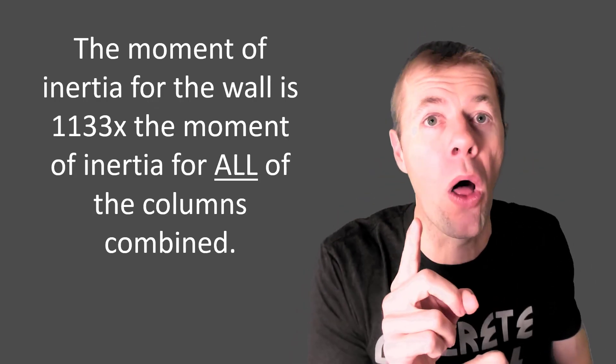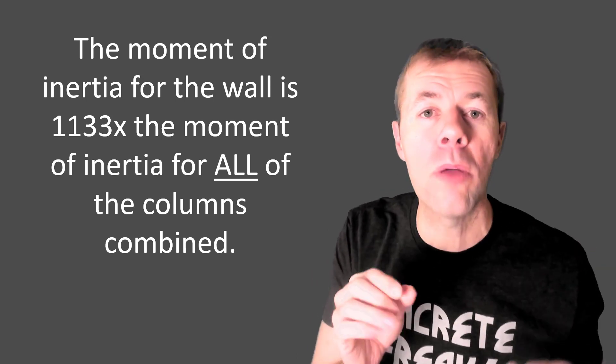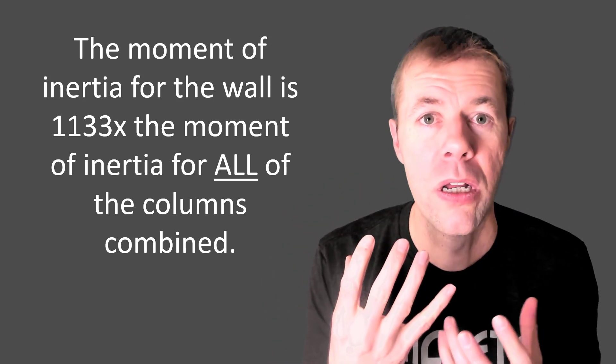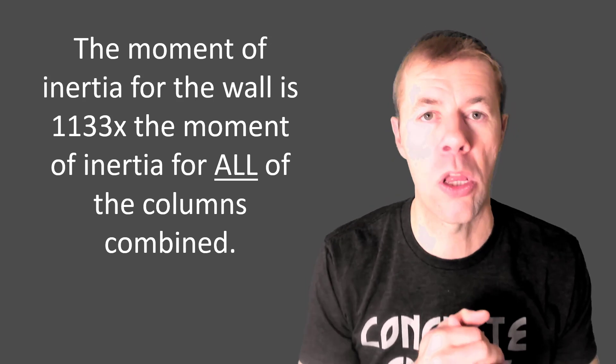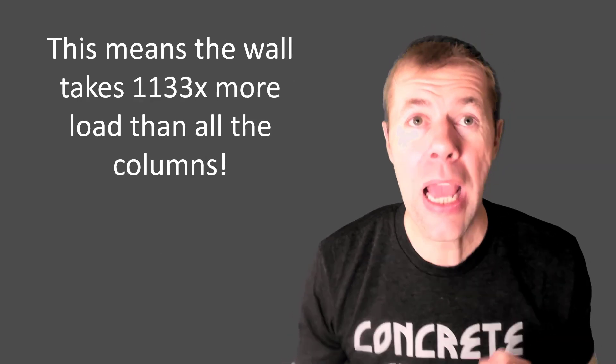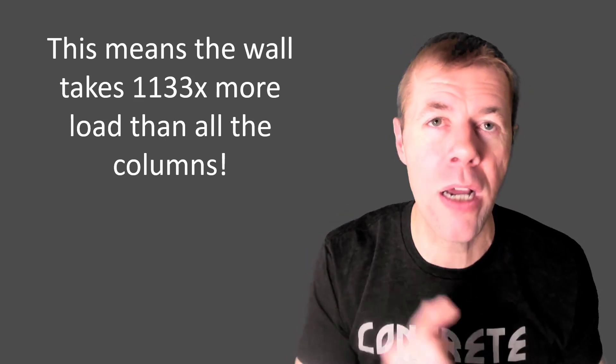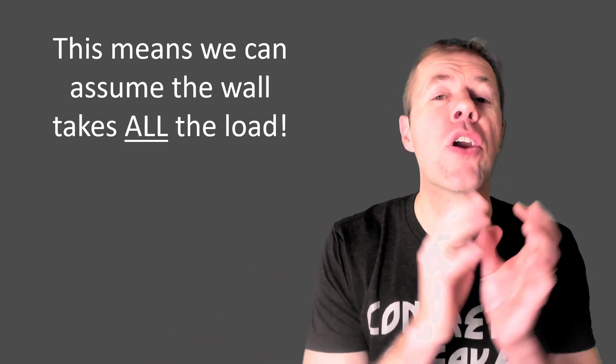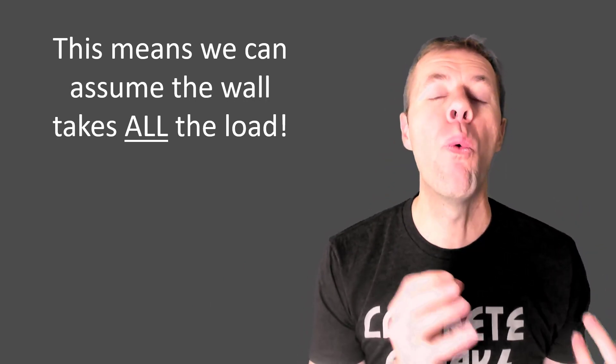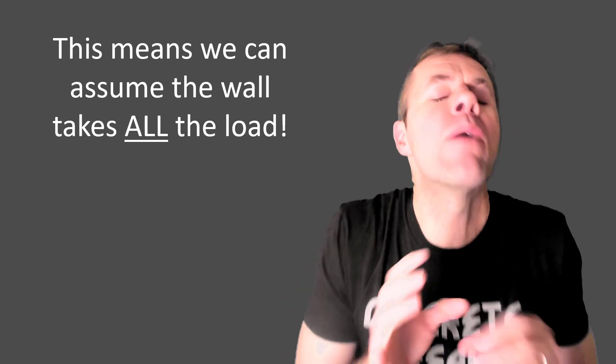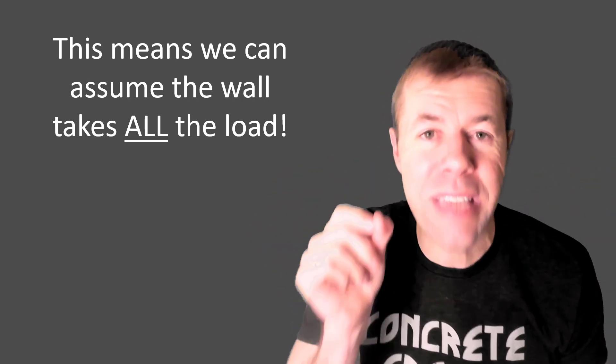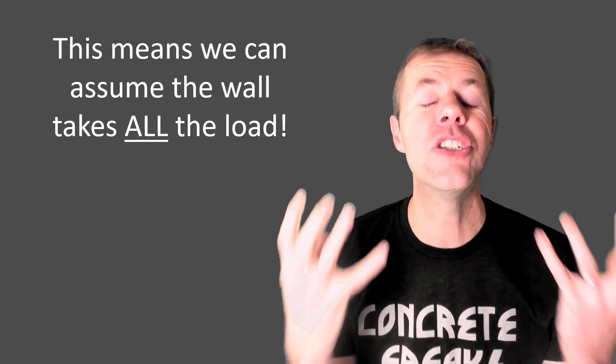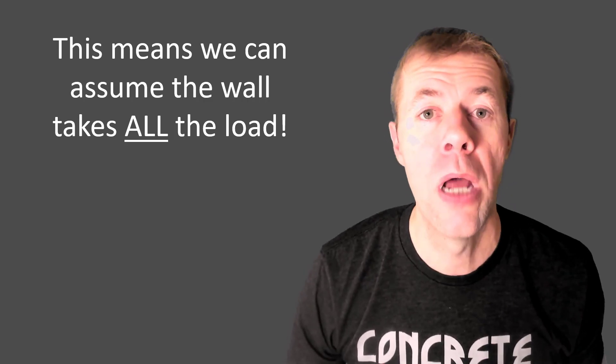So if you find the moment of inertia of the wall, and you compare it to all the other columns, the wall has a moment of inertia that's 1,133 times larger than all of the other moment of inertia of the columns put together. Yeah. Isn't that insane? That means the wall takes 1,133 times more load than all the columns put together. That means that we can assume that the columns take nothing, and the wall takes everything. You might say, whoa, what if my wall wasn't that big? Well, even if your moment of inertia was 10 times what all your columns were put together, that is going to dwarf and just suck up all the load. Because remember, load is distributed by stiffness.